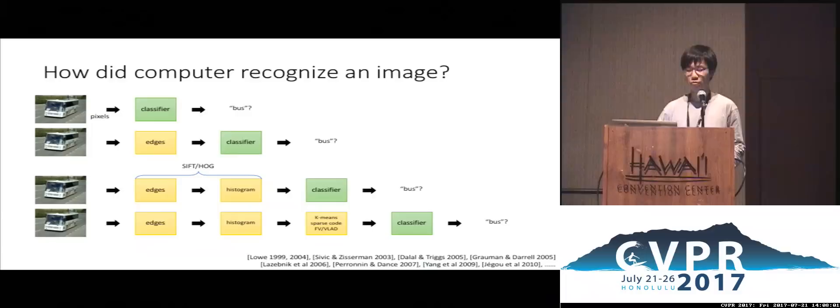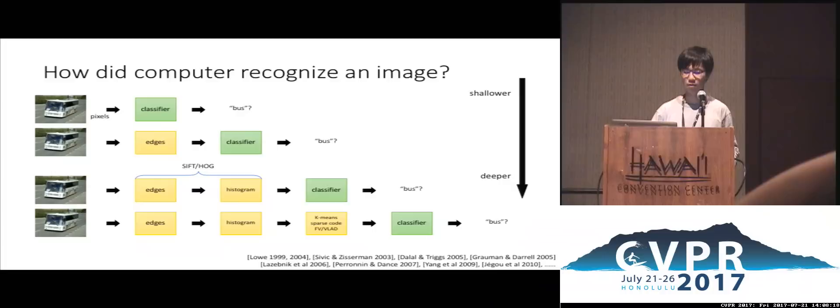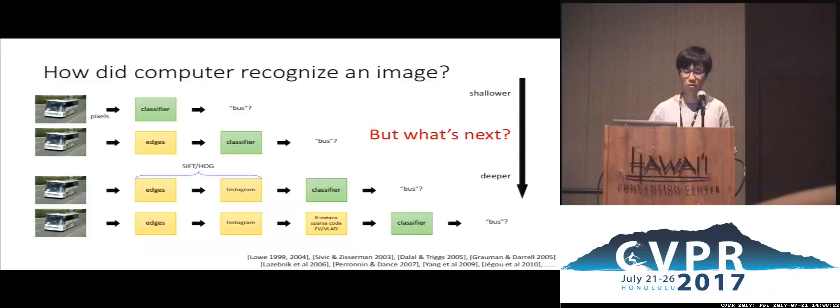From this diagram, we can see that models go from simpler to more complicated form — from shallower to deeper. But what can we do if we want an even better model?